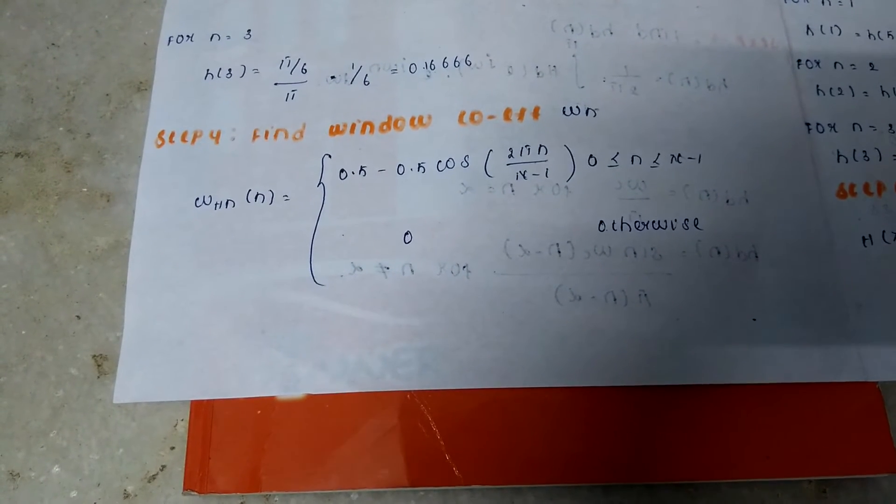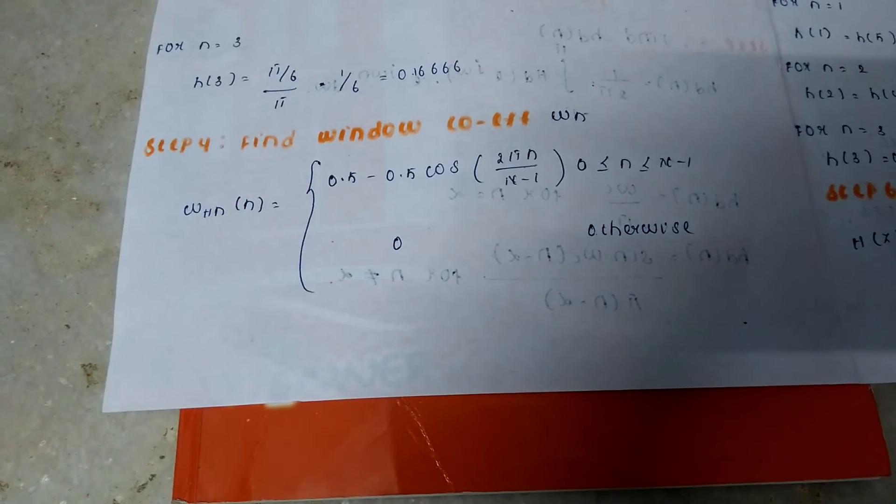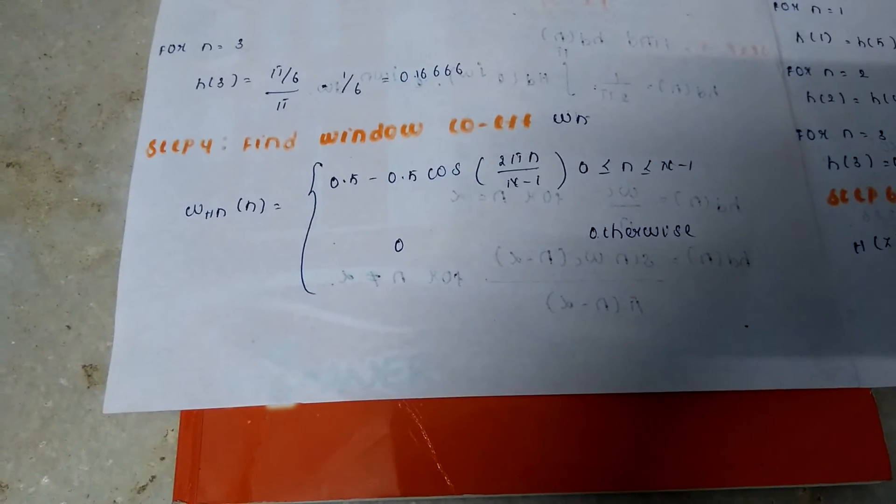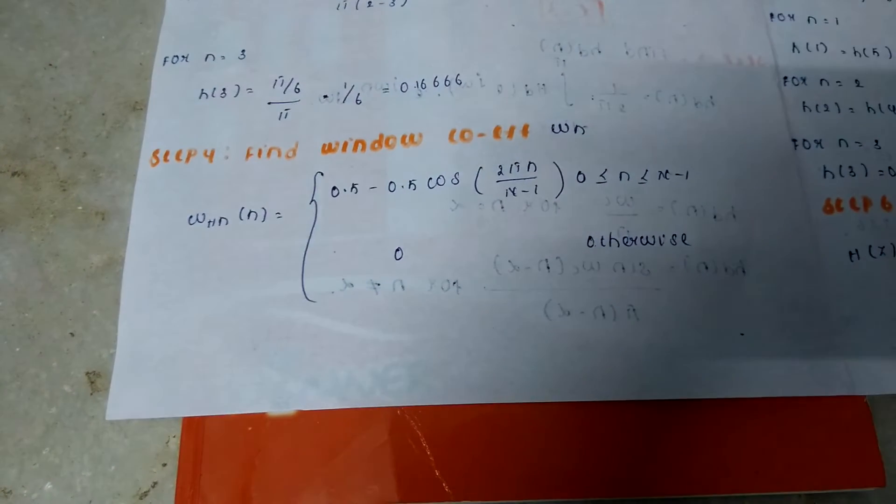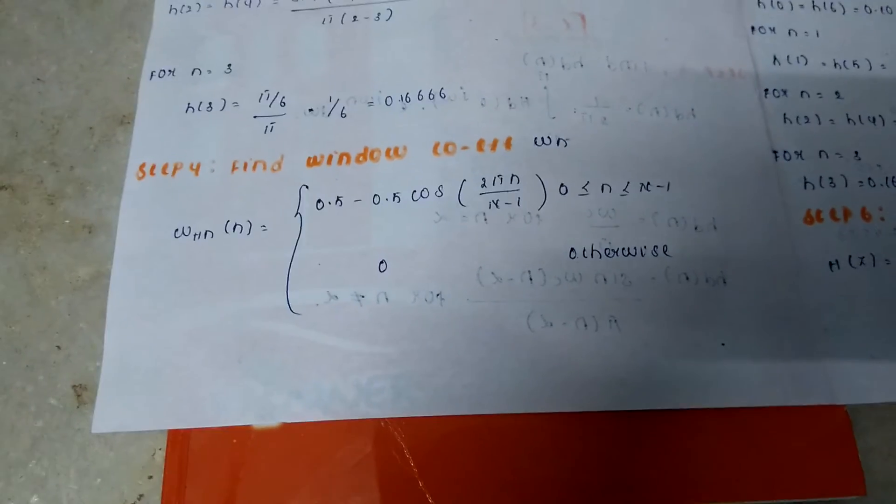The limit is 0 ≤ n ≤ n-1, and 0 otherwise. Here the n value ranges from 0 to 6, so we want to substitute for n = 0.